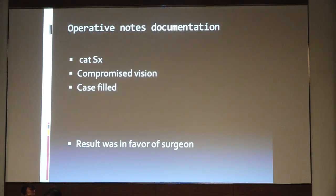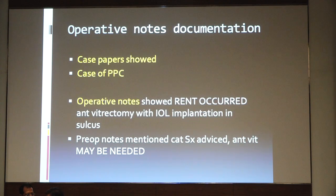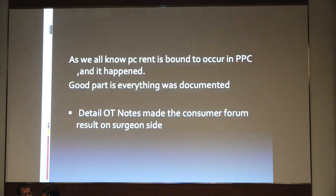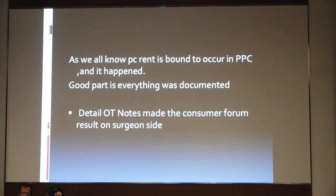Regarding operative note documentation: in a cataract surgery case where the patient had compromised vision, the patient still filed a case, but the result was in favor of the surgeon because operative notes documented that the patient had a posterior polar cataract — and as we know, posterior capsular dehiscence may occur anytime during such procedures. The notes also mentioned that the patient had vitrectomy on the table. Detailed OT notes are absolutely important. Once you finish the OT, if you find there were problems during the procedure, always mention them in the OT notes.